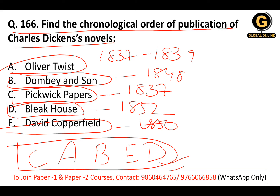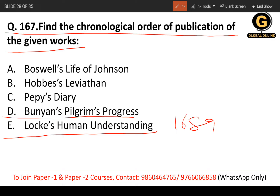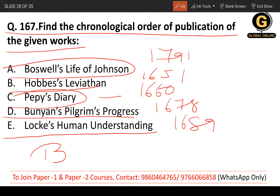Question 166: Find the chronological order of publication of the given works. Hobbes' Leviathan — 1651. Pepys' Diary — 1660. Bunyan's Pilgrim's Progress — 1678. Locke's Human Understanding — 1689. Boswell's Life of Johnson — 1791. Correct order: B (1651), C (1660), D (1678), E (1689), A (1791).